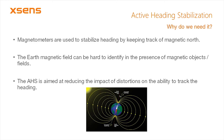In general, magnetometers are used to stabilize heading estimates by keeping track of magnetic north. However, in the presence of magnetic objects or additional magnetic fields, it can be hard to distinguish between these disturbances and the Earth's magnetic field. The AHS feature aims to reduce the impact of these distortions and maintain a stable heading estimate.